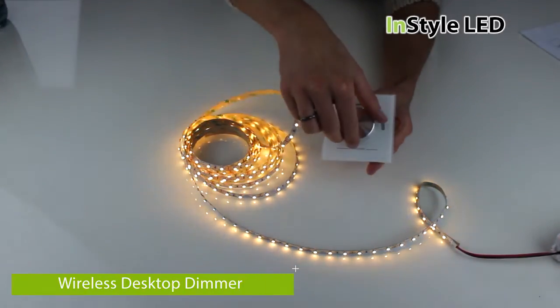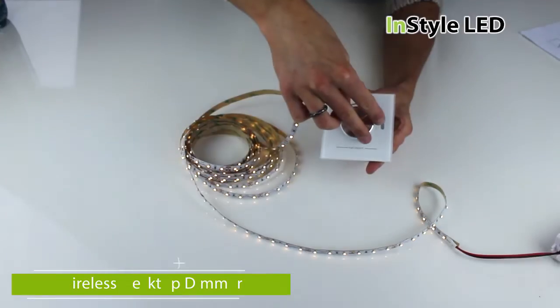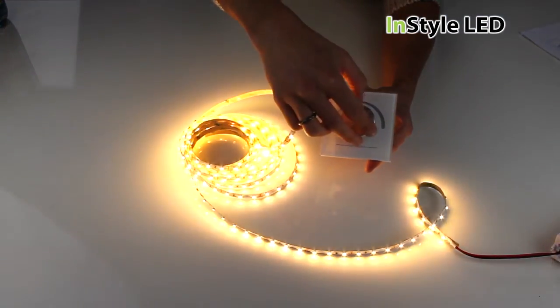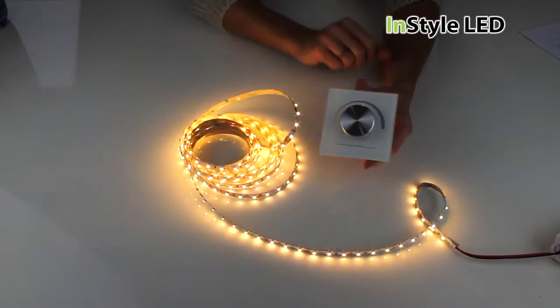This is the wireless wall dimmer by InStyle LED. It is a wall dimmer that can connect to numerous receivers via an RF signal to fully dim the LED tape from 0 to 100%.